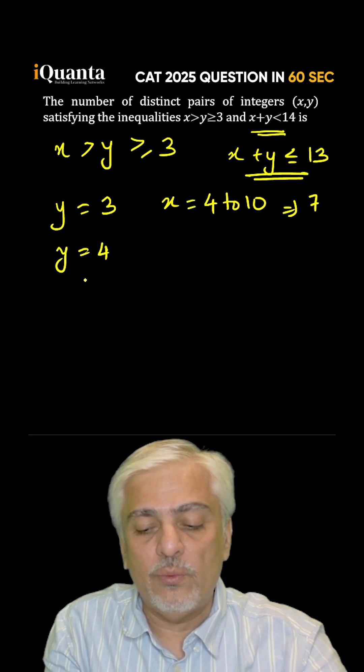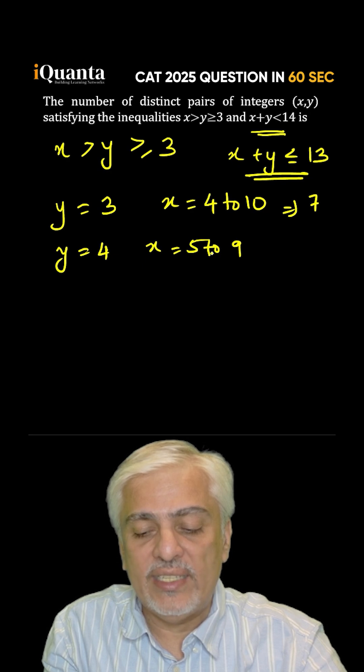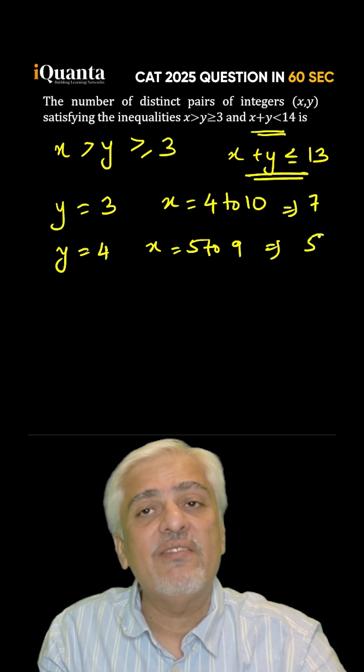If I increase y, y becomes 4, x can go from 5 to 9 again satisfying both the conditions which are exactly 5 values.